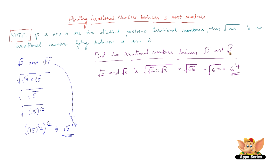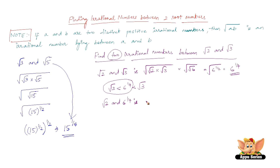We found one irrational number between √2 and √3, but the question asks for two. So we can write: √2 < 6^(1/4) < √3. Now let us find an irrational number between √2 and 6^(1/4). The irrational number lying between them is √(√2 × 6^(1/4)). Since √2 = 2^(1/2), taking its root gives 2^(1/4), and the root of 6^(1/4) gives 6^(1/8).